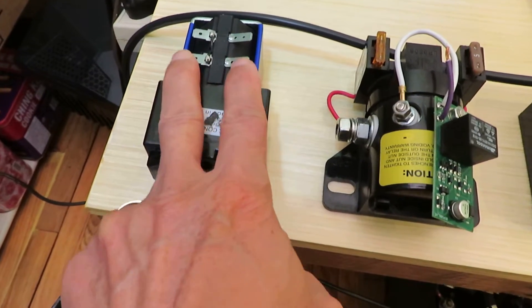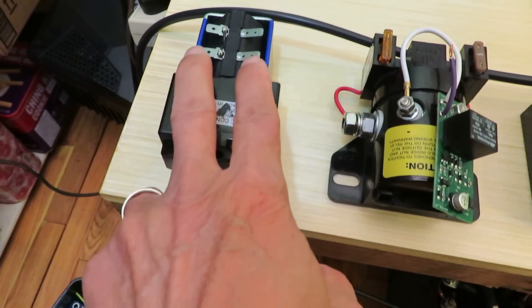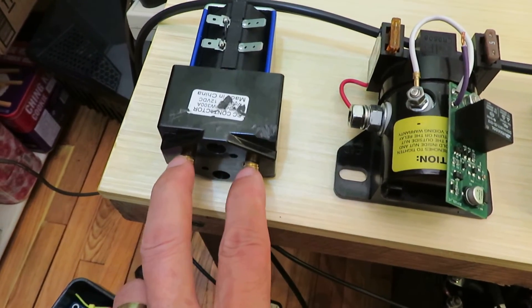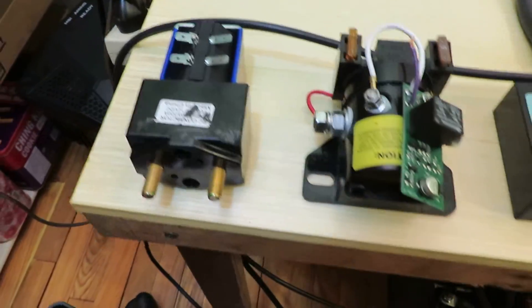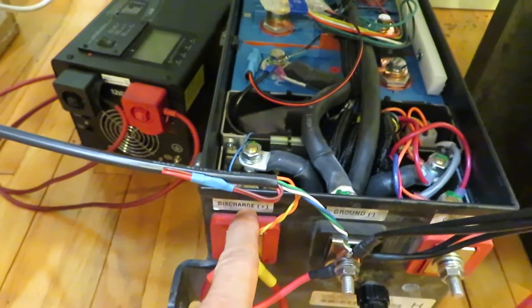You put voltage on the coil, the contactor would close. You remove the voltage it will open. This contactor is used in our EcoTrack battery so one on the charge side and one on the discharge side.